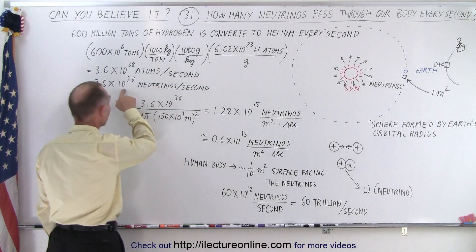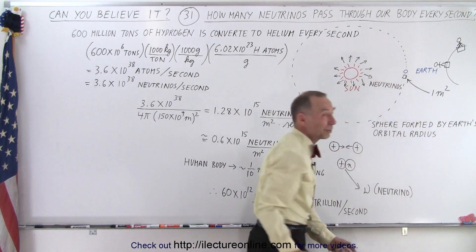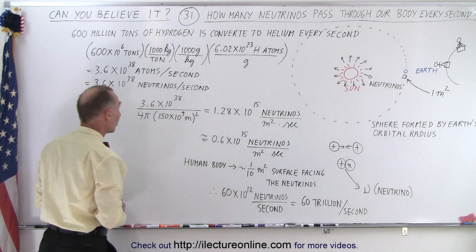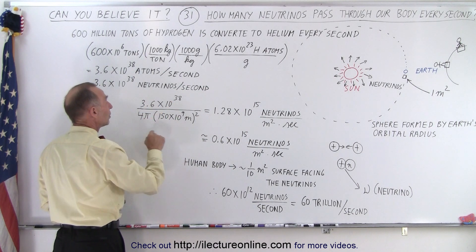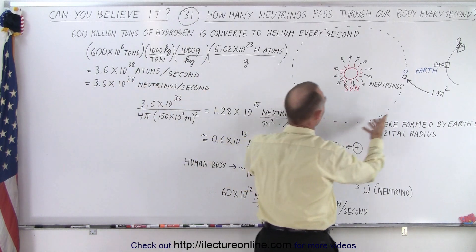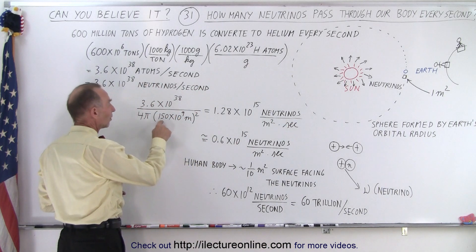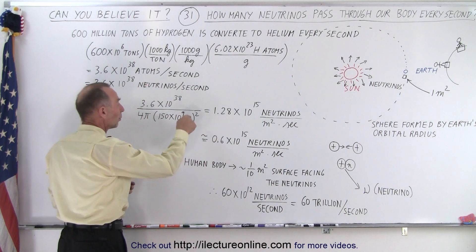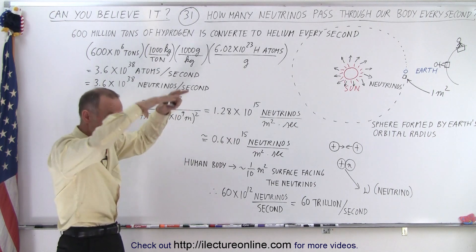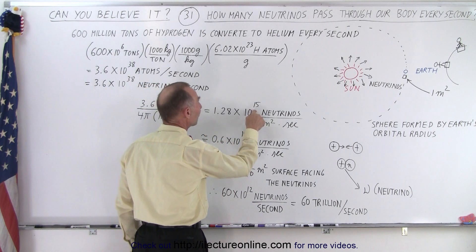So, how many neutrinos will slam into the surface of the Earth that's situated directly towards the Sun? And let's say we take one square meter of surface of the Earth, how many neutrinos will hit that? Well, you say, well, there's a lot of neutrinos leaving the Sun, but a square meter at a distance of 150 million kilometers, how many neutrinos can be left over? Well, you'd be surprised. We take 3.6 times 10^38 neutrinos and divide that by the surface area of a sphere that's formed by the Earth's orbital radius.